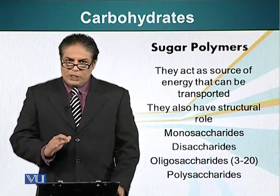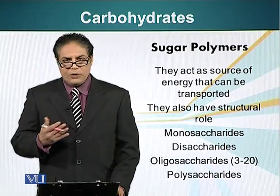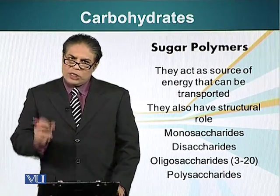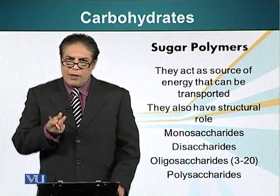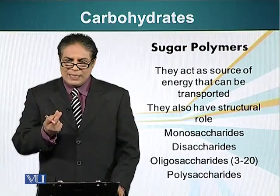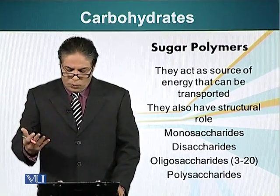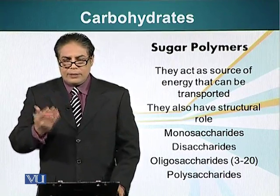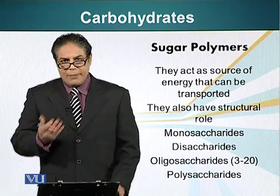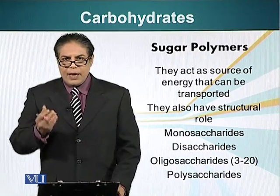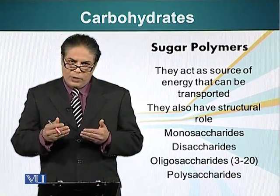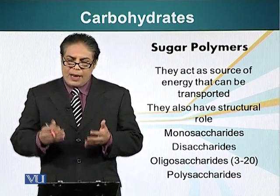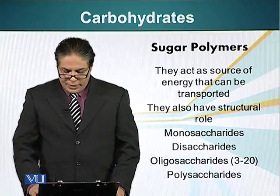Carbohydrates can be classified into four different groups. The monosaccharides, in which the monomer — the basic unit of carbohydrates — exists on its own. The disaccharides: a simple example of a disaccharide is table sugar, which we use. It is a molecule in which two monomers are linked together and we use that in our daily routine.